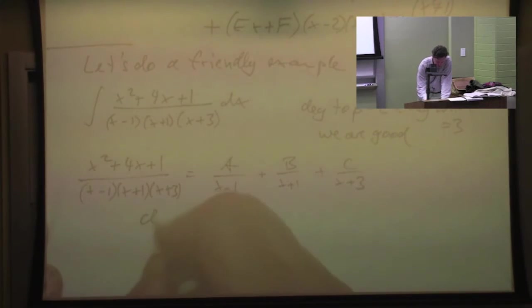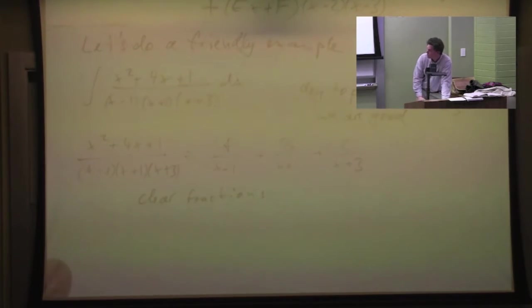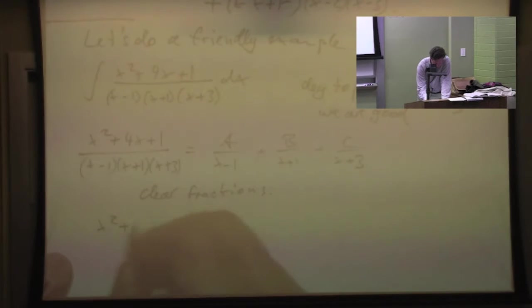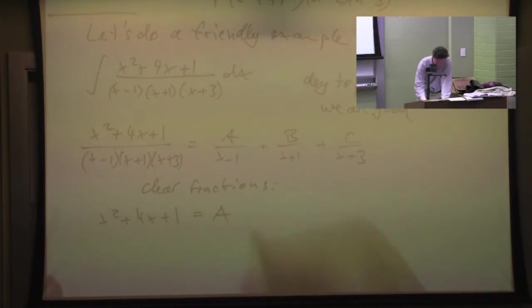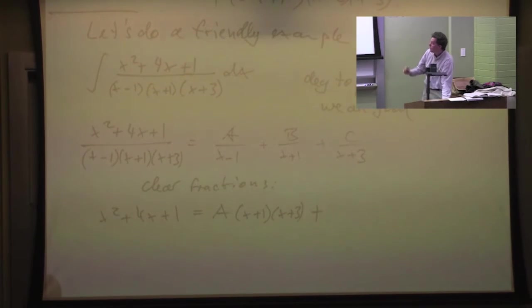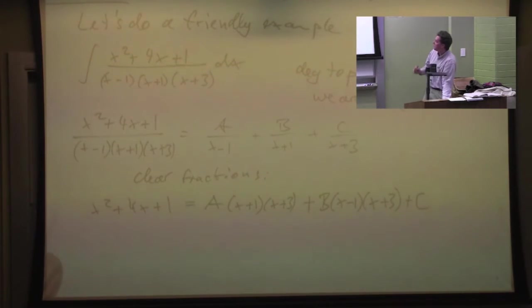Clear fractions. So you get your x squared plus 4x plus 1. Now on the A, you're losing the x minus 1, but you're keeping the x plus 1 and the x plus 3. For the B, you're keeping x minus 1 and x plus 3. And for the C, you keep the x minus 1 and x plus 1.